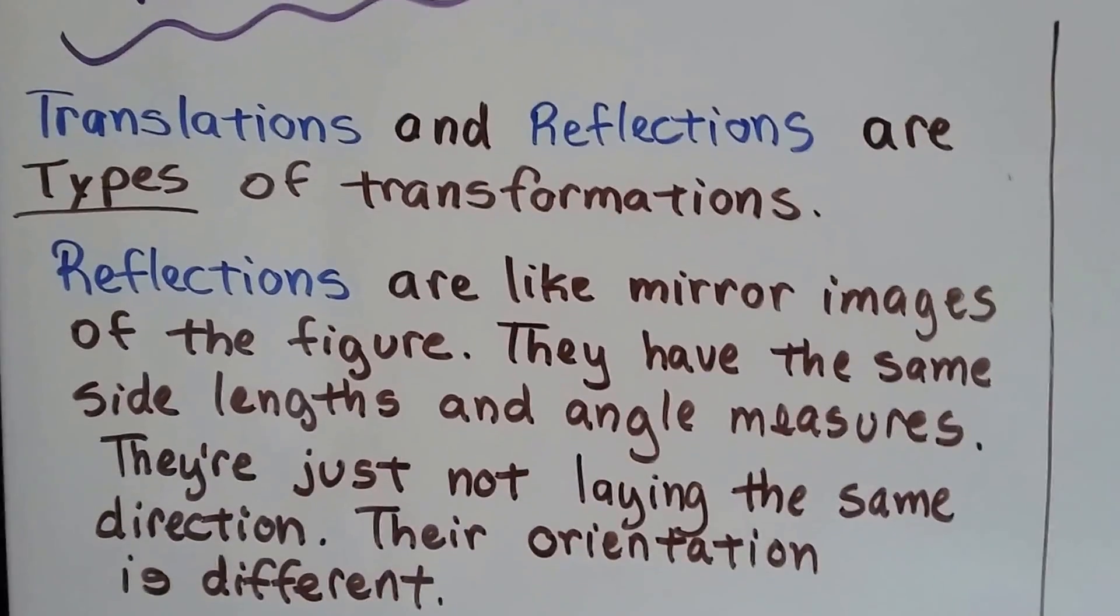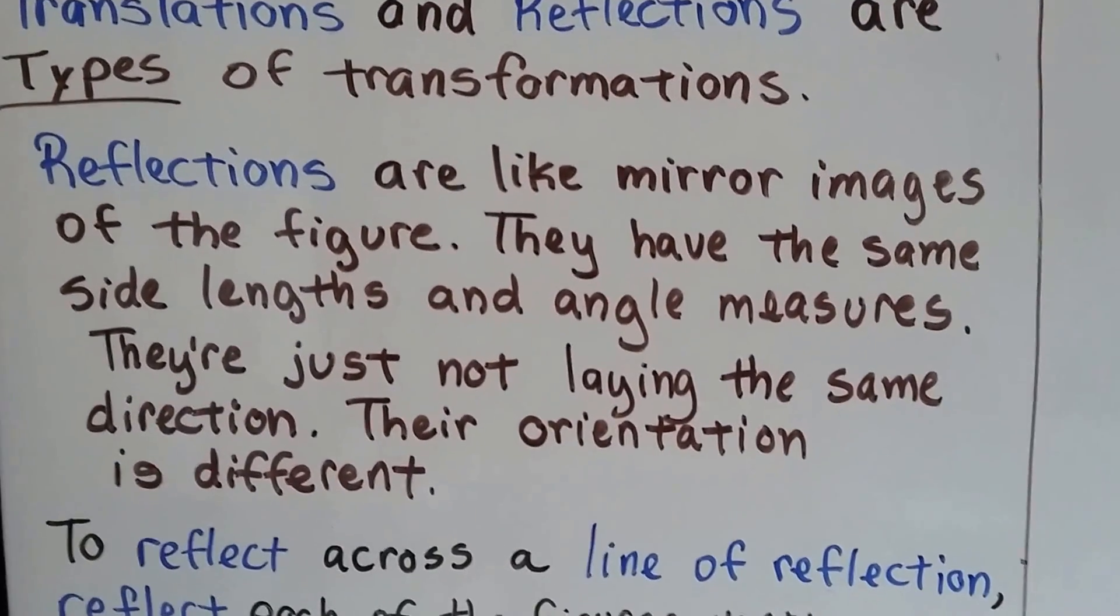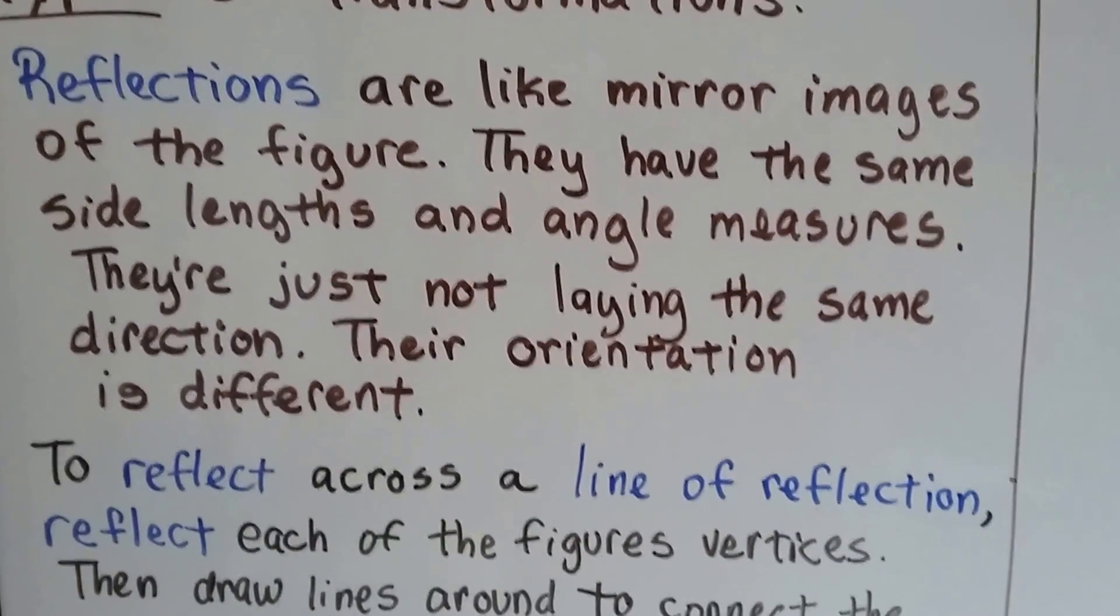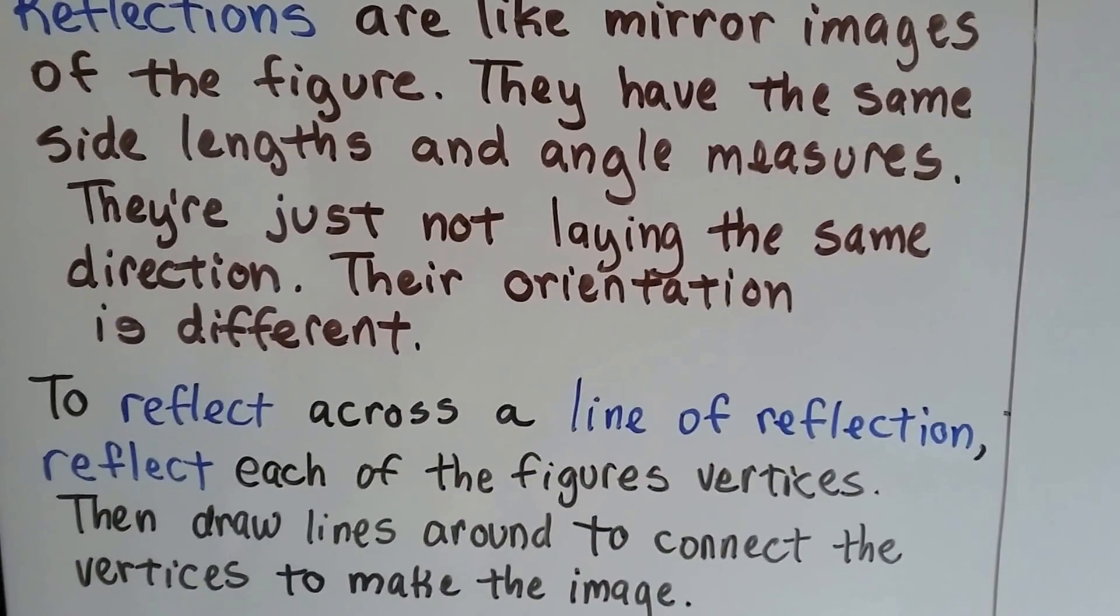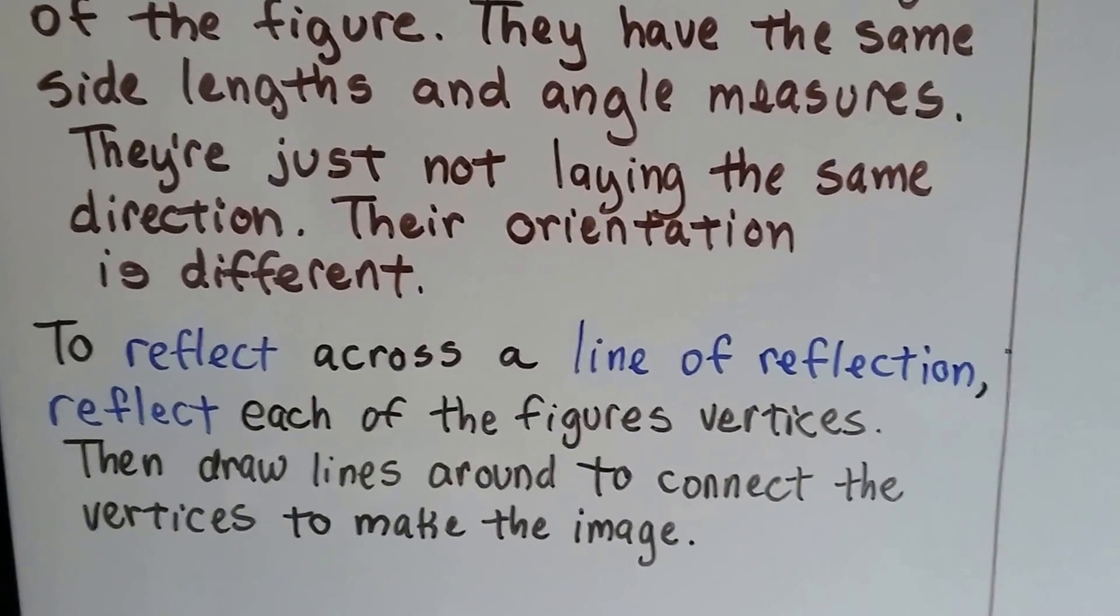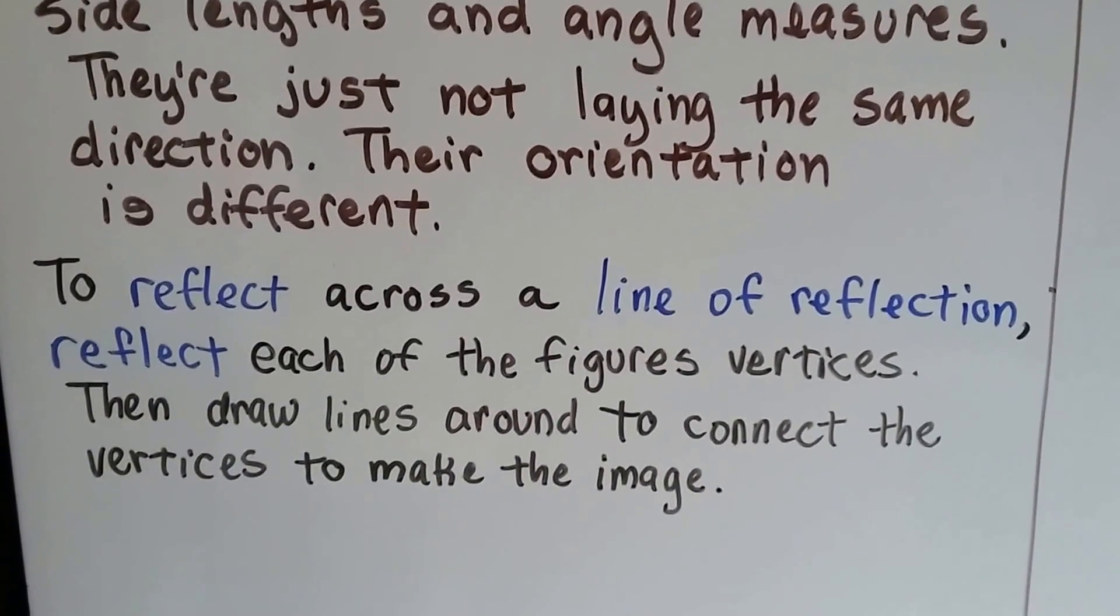Translations and reflections are types of transformations. The reflections are like mirror images of the figure, and they have the same side lengths and angle measures. They're just not laying the same direction, their orientation is different.